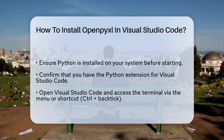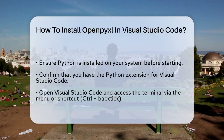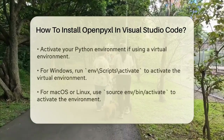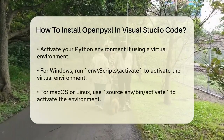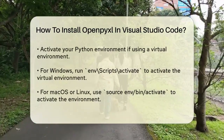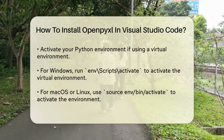If you're using Visual Studio Code, you likely already have Python set up. To install OpenPixel, you'll need to use the pip package manager, which is the standard way to install Python packages. Open Visual Studio Code and make sure you have the Python extension installed. This extension helps you work with Python files and manage your Python environment.